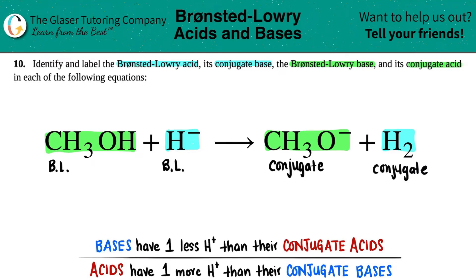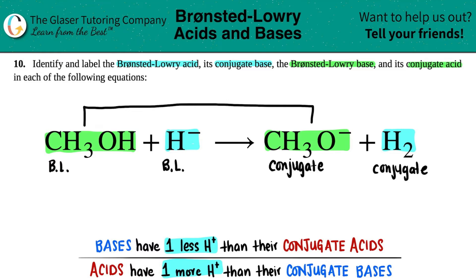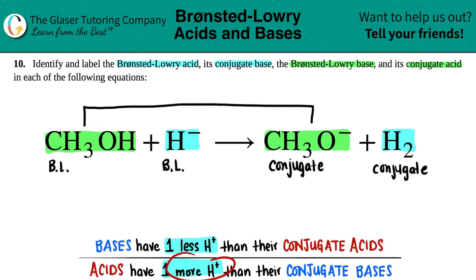Now we're going to figure out which one is the actual acid and base. Acids always have one more hydrogen than the base in the pair — the conjugate base. Likewise, bases always have one less hydrogen than its conjugate acid in a pair. So all you have to do is tally up the hydrogens. For CH3OH, I have three hydrogens plus a lonely hydrogen, so a total of four. On the other side of the pair, I only have three hydrogens — the other hydrogen got dropped. This one has one more hydrogen; four beats out three. The acid always has one more hydrogen, so CH3OH has to be the Bronsted-Lowry acid, and the other part of the pair — CH3O minus — has to be the conjugate base.